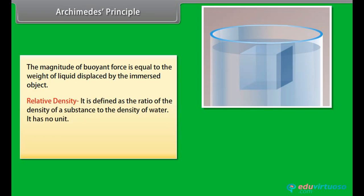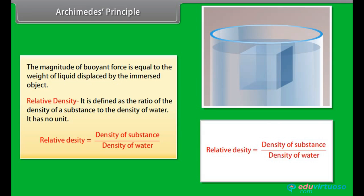Relative density: it is defined as the ratio of the density of a substance to the density of water. It has no unit. Relative density is equal to density of substance upon density of water.